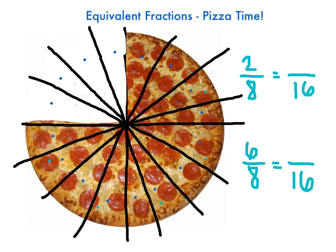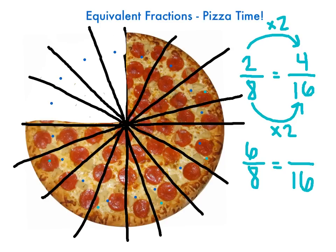Now that we have sixteen slices, how many slices did Rebecca eat? She ate two eighths to begin with. So however I got from eight to sixteen, I need to do on the top also — because I want that number one. Eight times two is sixteen, and two times two gives me four. So Rebecca ate four sixteenths of my pizza. We could also ask how many pieces are left over: eight times two to get sixteen, so six times two gives me twelve. Twelve sixteenths is left over.